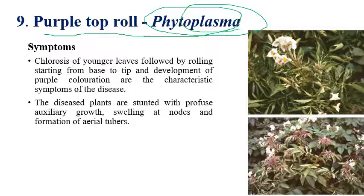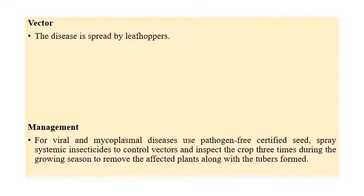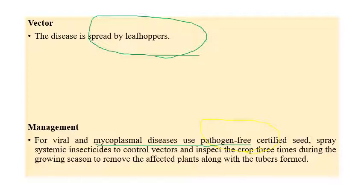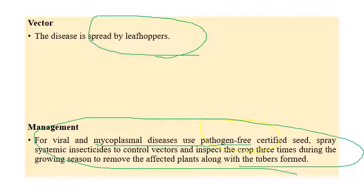Purple top roll is a phytoplasmal disease. Symptoms include rolling of leaves, chlorosis, profuse axillary growth, and shortening of nodes and internodes — which is quite common in any phytoplasmal disease, producing a broom-like appearance. The vector for this disease is the leafhopper. Almost all phytoplasmal and spiroplasmal diseases are transmitted by leafhoppers. Management includes using certified disease-free seeds, spraying systemic insecticides to control the vector, and crop rotation with disease-free tubers.